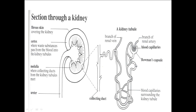If we look at a cross-section of the kidney, you can see one individual kidney. It's basically split up into two parts. You've got the outer part, which is known as the cortex, and you've also got the inner part, which is known as the medulla.